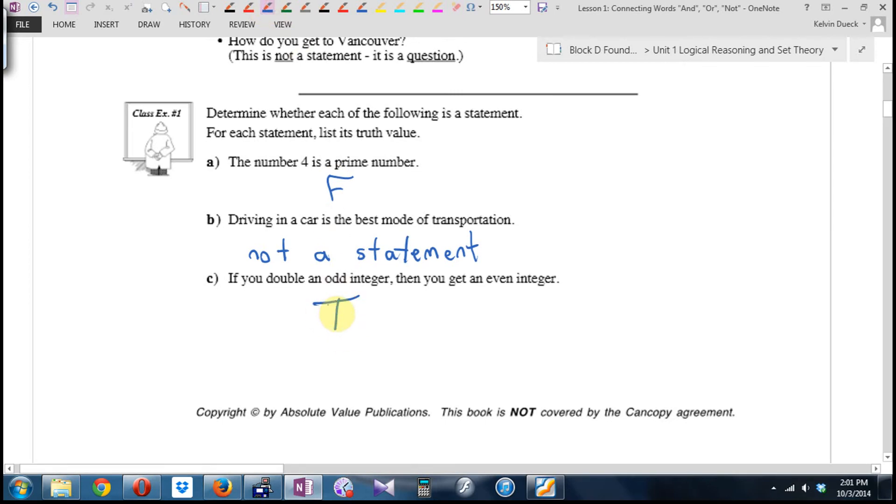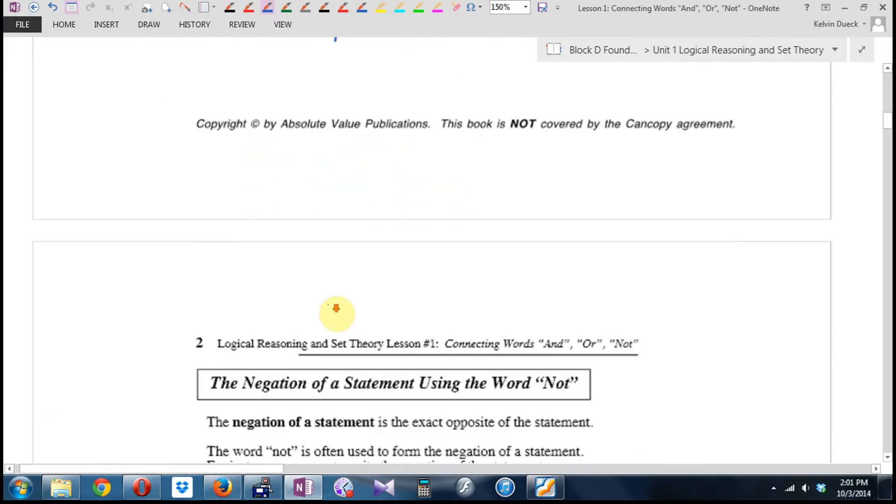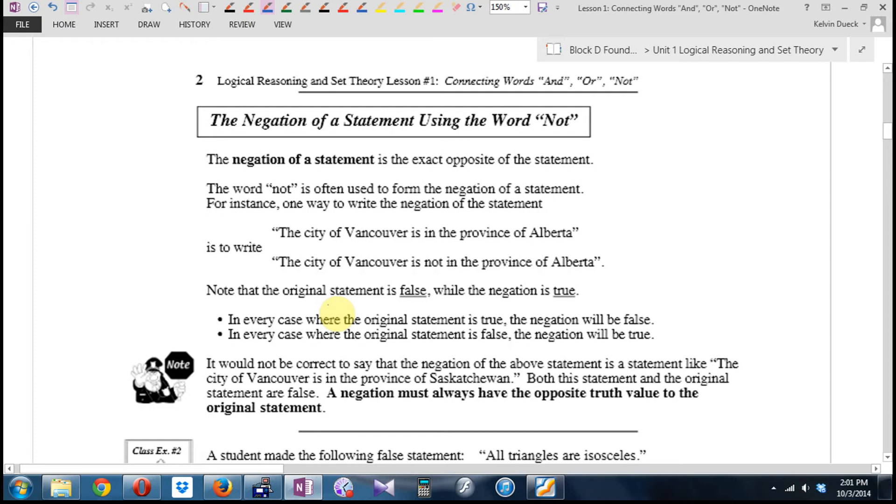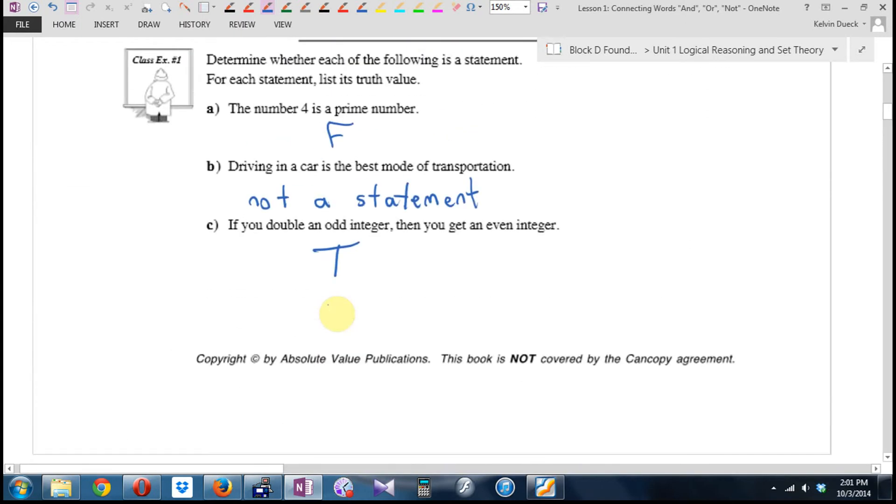B, driving in a car is the best mode of transportation. Is that a statement? So, I'm not going to put a truth value. I'm just going to write 'not a statement'. And later on in this unit or the next, you'll learn the abbreviation for 'not a'. Because no one would write out those two common words. There's got to be a symbol for that. There is. For those of you who are wondering, that's not a statement. It's a horizontal bar above everything means 'not'. But we'll get there in the notes later. If you double an odd integer, then you get an even integer. Is that a statement? Yes, it's a very classic statement. It's an if-then.